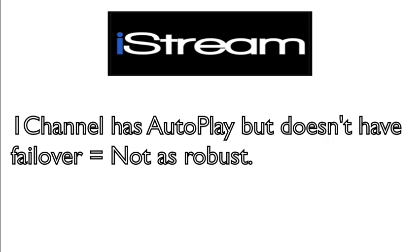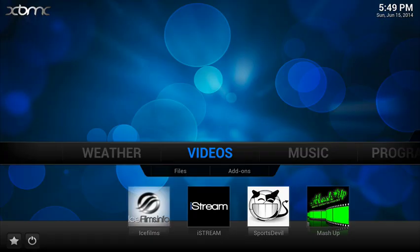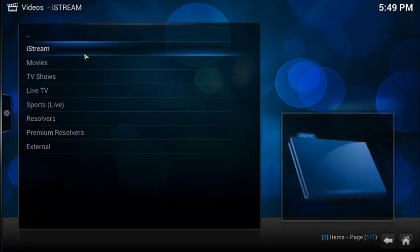One Channel is another add-on that has autoplay, but One Channel's autoplay doesn't have failover. It goes through the selection process and attempts to play the best choice it finds, but if for any reason the video won't play, One Channel simply stops trying. iStream, on the other hand, does have failover, which means it will try until either it finds a source that plays or until it runs out of sources.